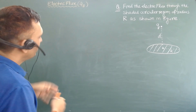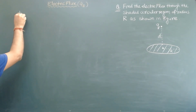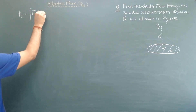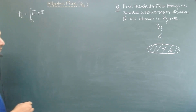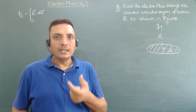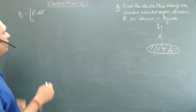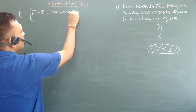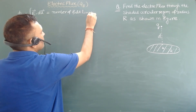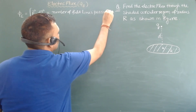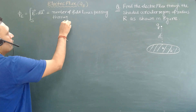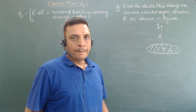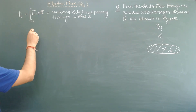First, let us see what is electric flux. Electric flux is defined by the integral of E dot dA over a particular surface. E gives the number of field lines per unit area, so if you take the surface integral with dA, this will give you the number of field lines passing through surface S.